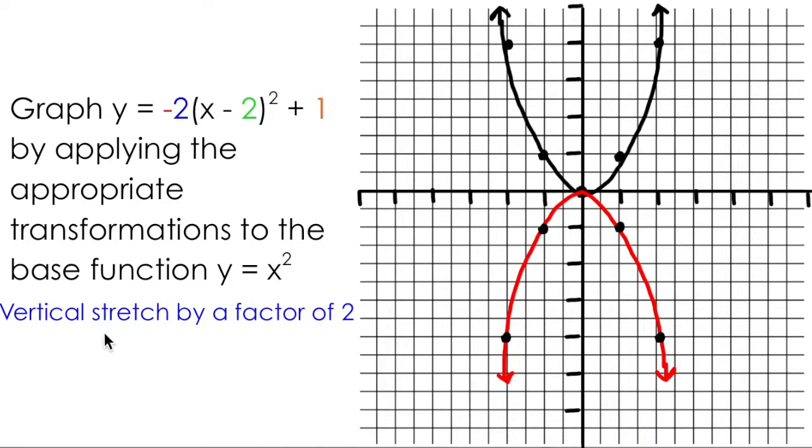The next transformation moving from left to right is a vertical stretch by a factor of 2. Because this value is greater than 1, I know that I'm going to multiply all of my y values by 2, resulting in a stretch. Starting with this point here, the y value is currently negative 1. If I multiply negative 1 by 2, I get negative 2. This point here is currently also at negative 1, so it will end up at negative 2 as well.